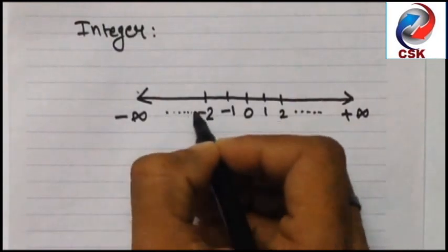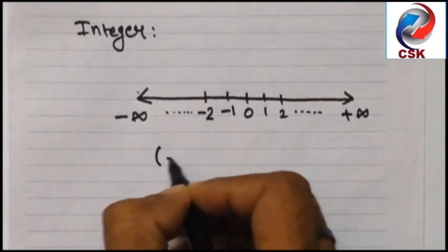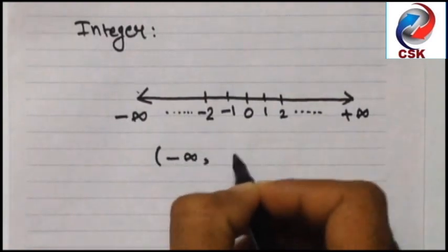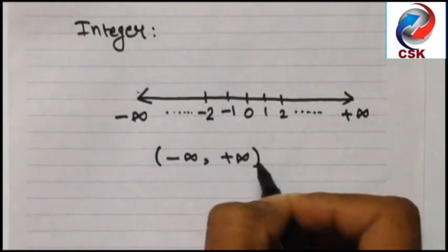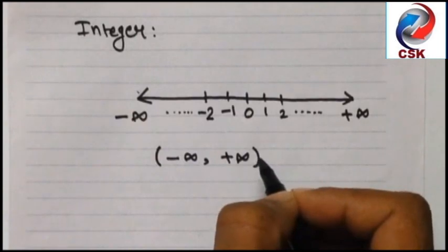But remember, in-between values like 1.2, 2.4 are not integers. And obviously, the range would be -∞ to +∞, where both are not included.